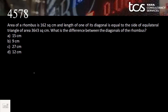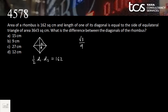Now a rhombus problem. In a rhombus, all four sides are equal but angles are not 90°. Let the diagonals be d1 and d2. Area of rhombus = ½ × d1 × d2 = 162 square centimeters. The length of one diagonal equals the side of an equilateral triangle whose area is 36√3. For an equilateral triangle, area = (√3/4)a² = 36√3, so a² = 144 and a = 12.